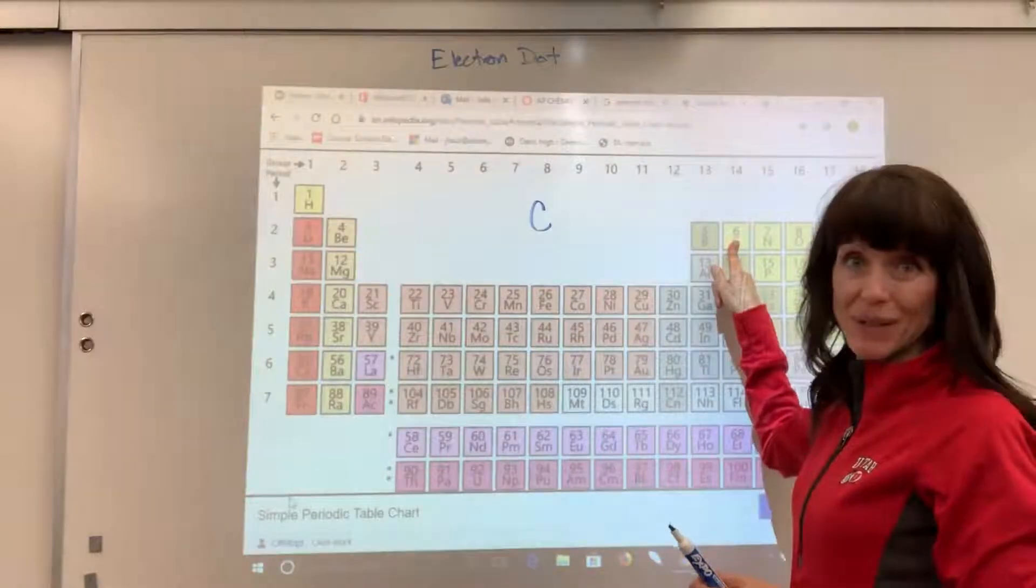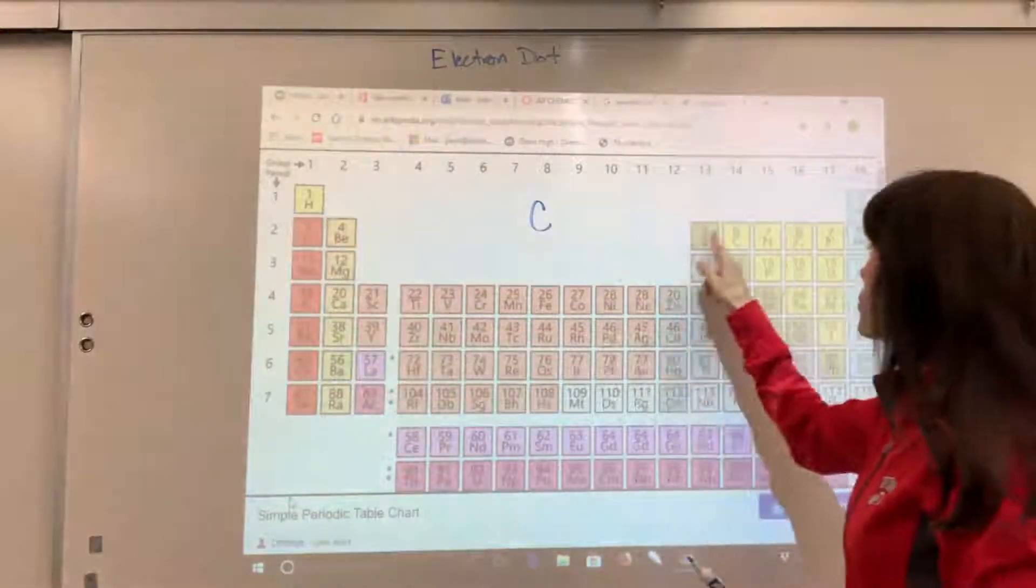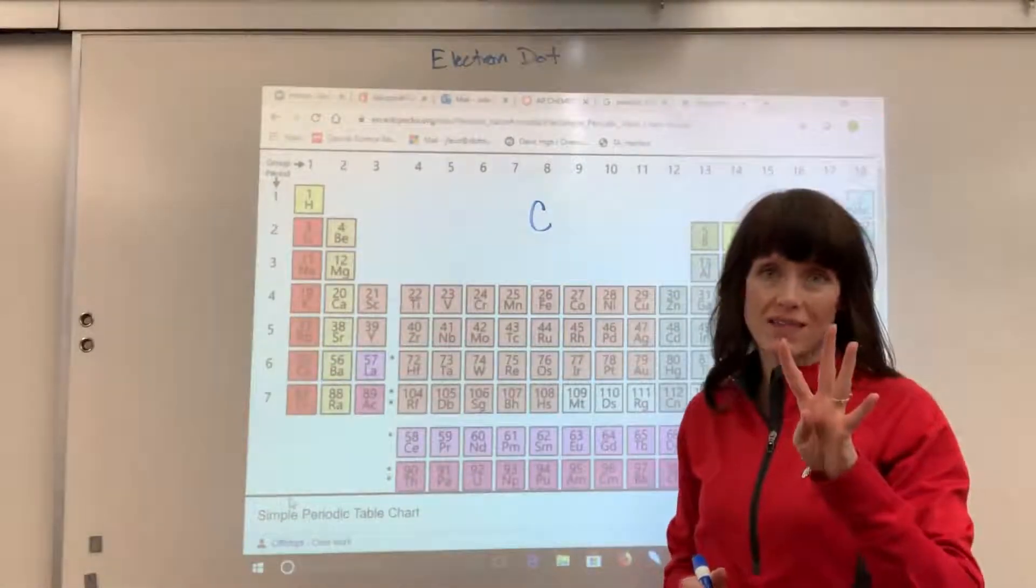So I find carbon there. It is atomic number six. I'm going to count from left to right. We've got one, two, three, four, four valence electrons.